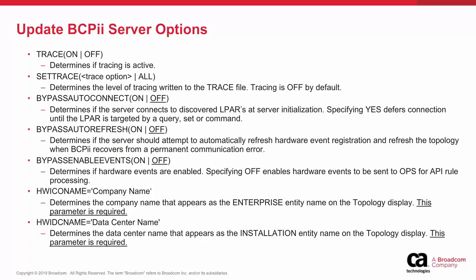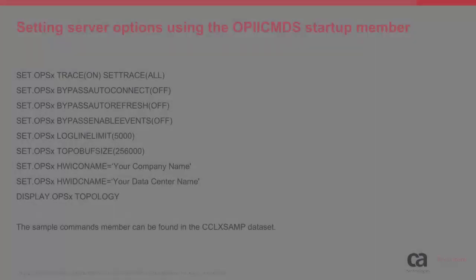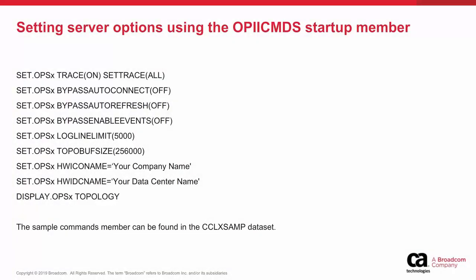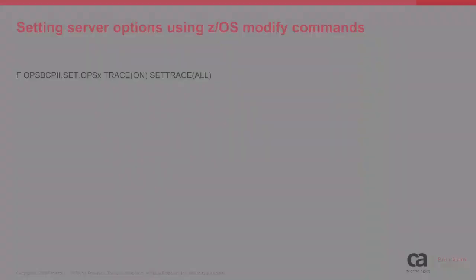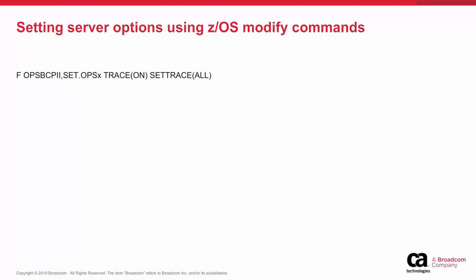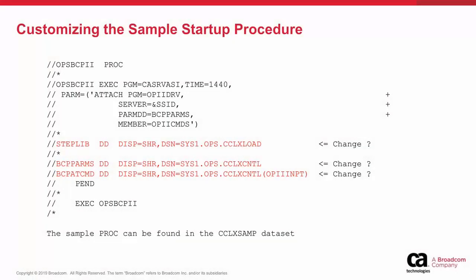Additional information about server options can be found in the Ops MVS documentation. Server options may be set by using the OPII command startup member. This member is read at Ops BCPII server initialization. A sample OPII command startup member is distributed with Ops MVS. After the Ops BCPII server initializes, options may be set by issuing modify commands. A sample server procedure is distributed with Ops MVS and may require customization.